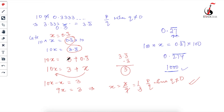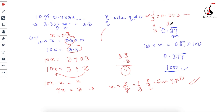Before the next question, here's a useful tip. Suppose you know that 1/3 = 0.333... and someone asks for the value of 2/3 in decimals without using long division. You already know the value of 1/3, so simply write 2 × (1/3) = 2 × 0.3̄ = 0.6̄. Simple multiplication!